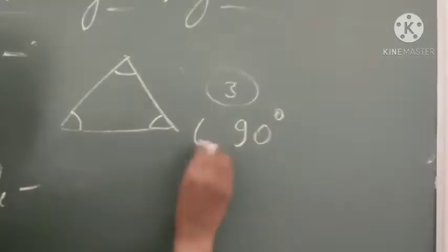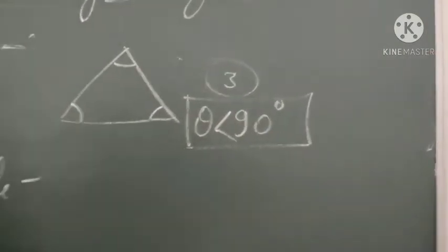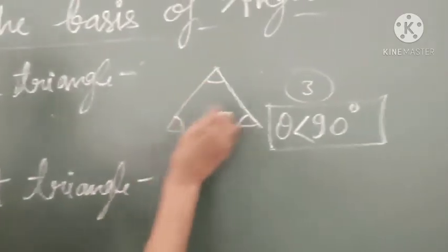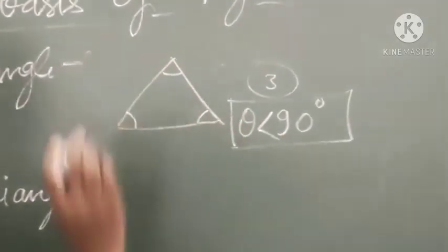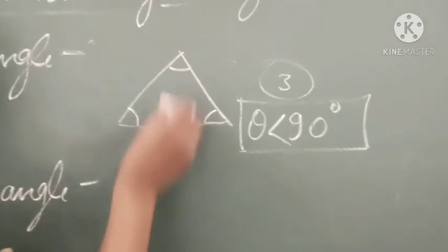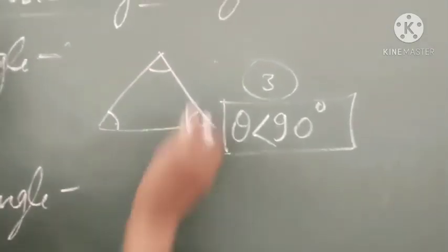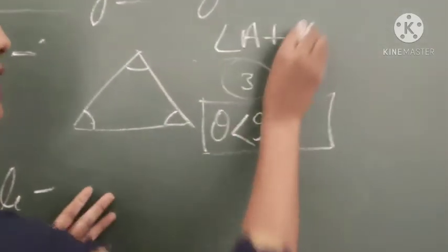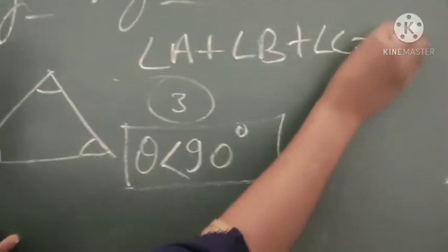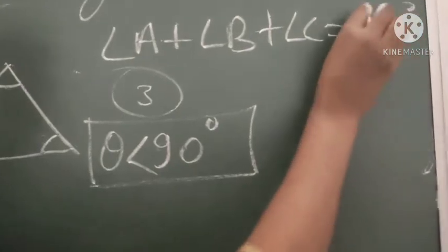Angles that are less than 90 degrees are called acute angles. So all 3 angles of the triangle must be less than 90 degrees. And the summation of all 3 angles — angle A, angle B, and angle C — must equal 180 degrees.